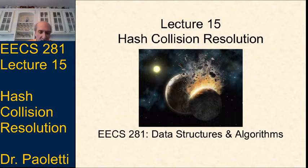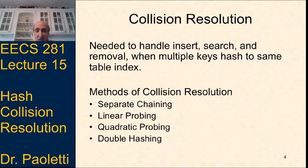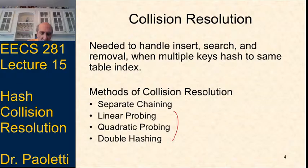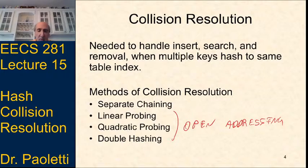For today's lecture, when we do insertion, search, removal, etc., there are going to be times when two keys hash to the same index. When that occurs, that's called a collision, and we have to resolve it somehow. The ways we're going to talk about today are separate chaining, and then linear probing, quadratic probing, and double hashing — these last three are all referred to as open addressing. After we've looked at all these methods, we'll also talk about how to grow the hash table if it becomes too full.